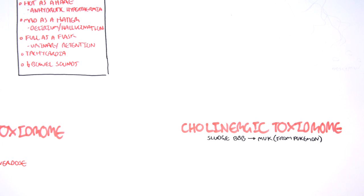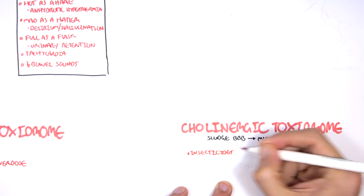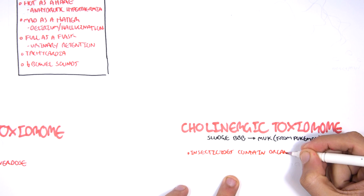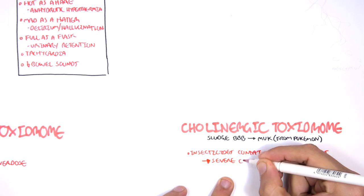Good memories. Now the causes of cholinergic toxicity are things such as insecticides which contain organophosphates which can cause severe cholinergic toxicity.